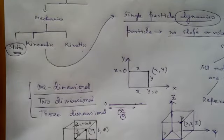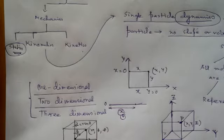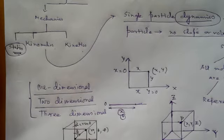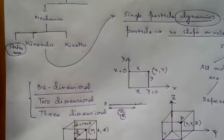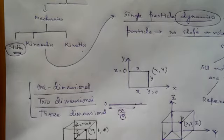A one-dimensional coordinate system applies when the motion of an object is confined to a particular straight line. The object's position along that line is described relative to a chosen origin point. If the object's motion is not confined to a single straight line but moves within a plane, then we use a two-dimensional frame of reference.